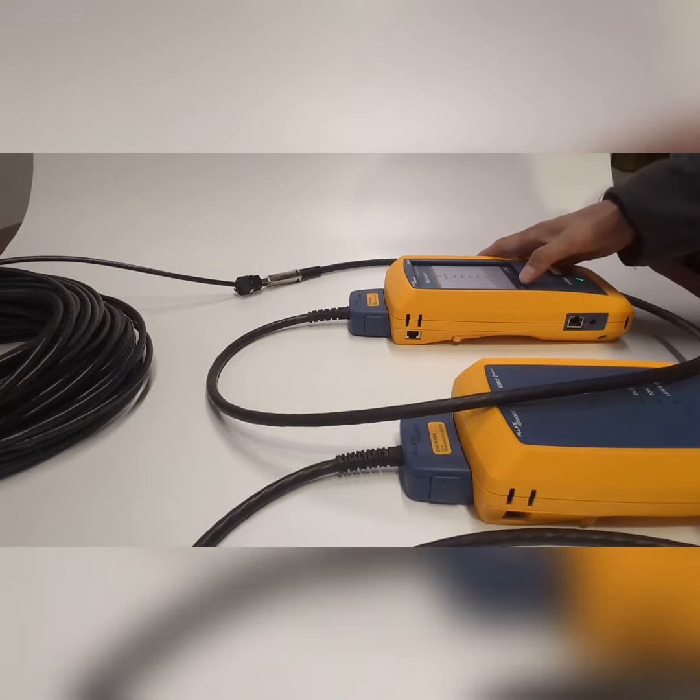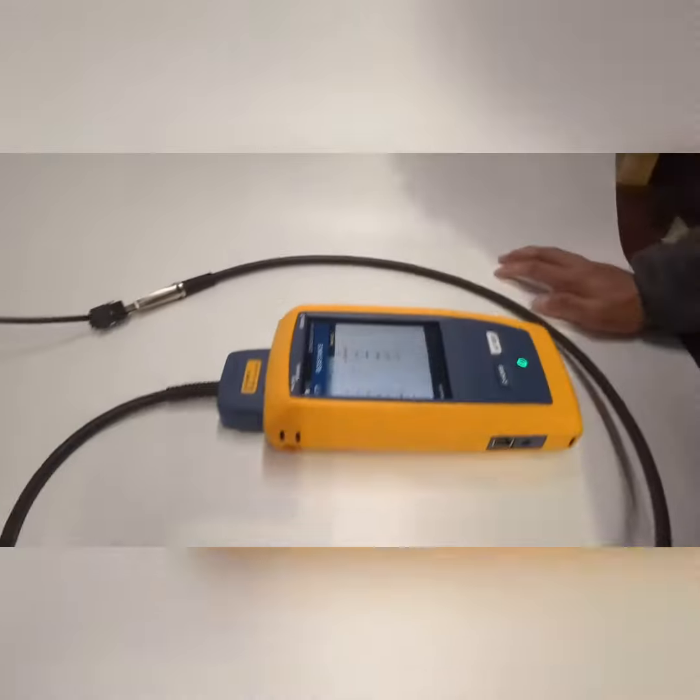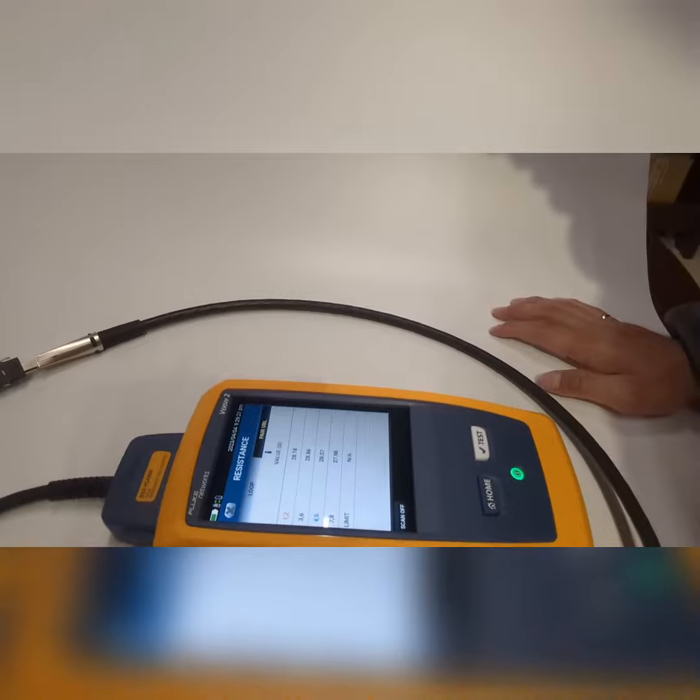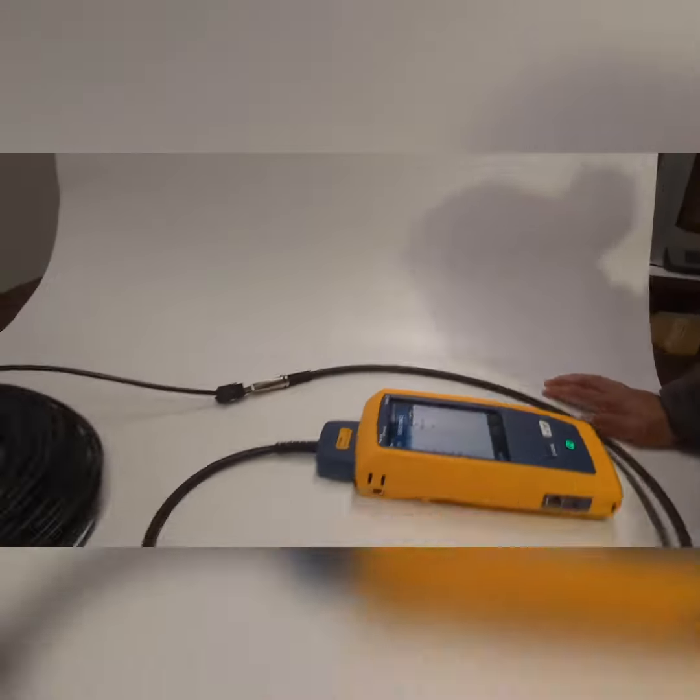Now we're testing a longer spool of CCA cable. Again, let's scan it with a Fluke tester. You can see the DC resistance value is about 28 ohms.